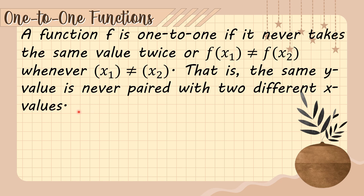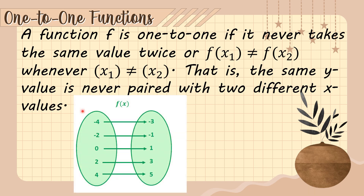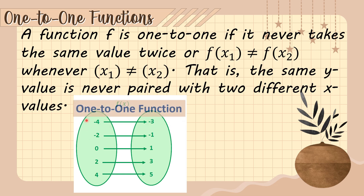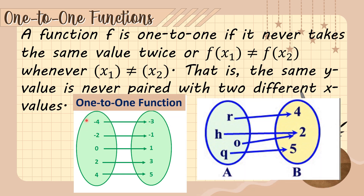For example, in this picture we have a function where each x value is paired to exactly one y value: negative four maps to negative three, negative two to negative one, zero to one, two to three, and four to five — each paired only once. This is an example of a one-to-one function.